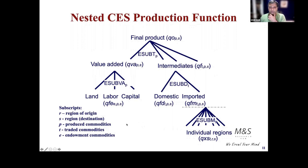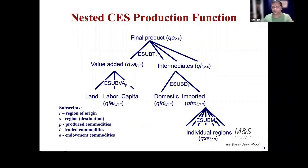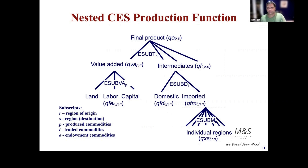Here r is the region of origin, s the region of destination. p is the produced commodity — typically the second index when there are three dimensions. t is the traded commodity used as input: to produce fabric (p) you need cotton (t). Similarly, to produce fabric (p) you need labor (e). That is how the index variables work in this production function.